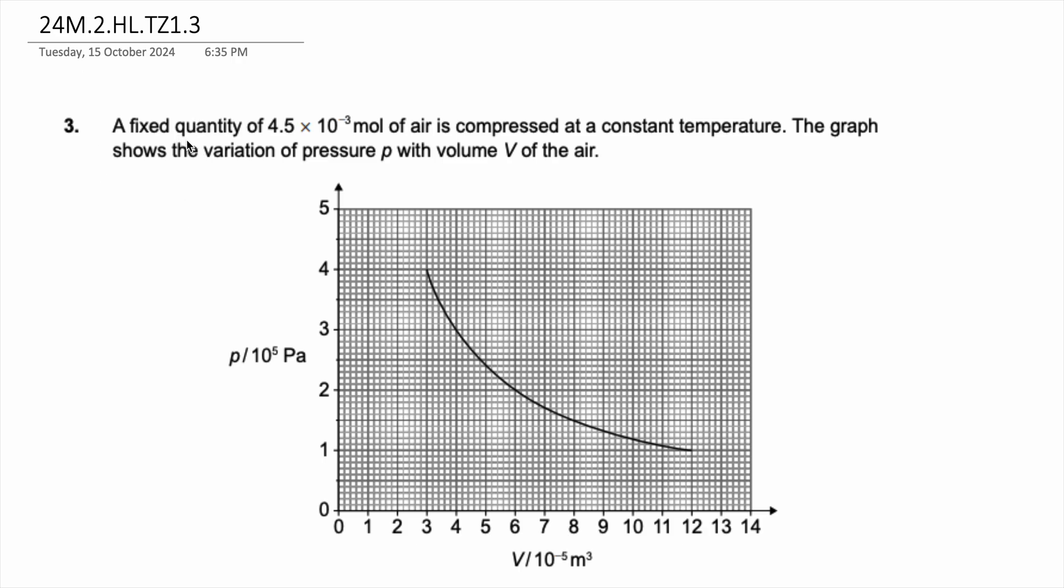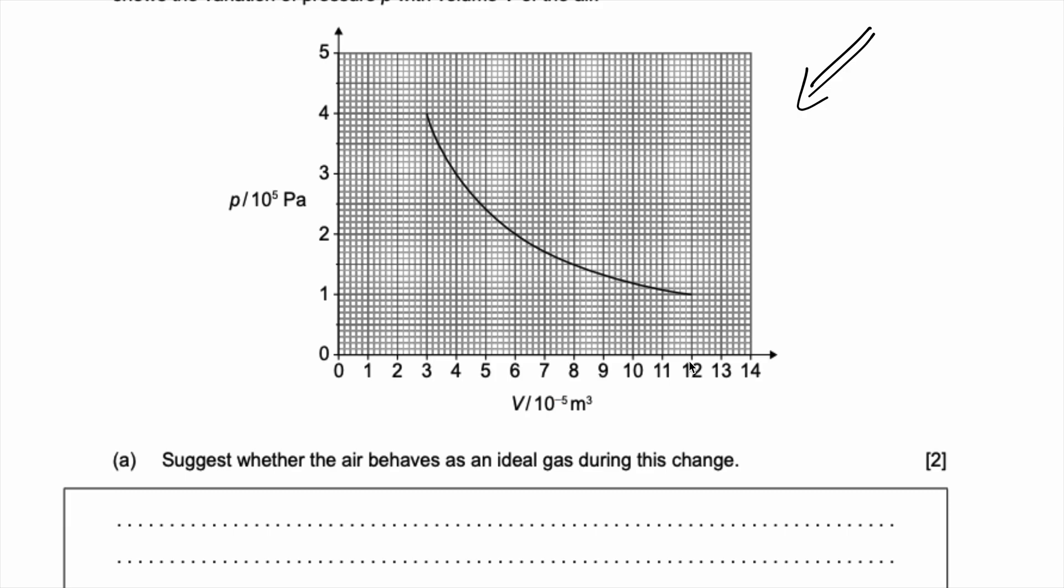A fixed quantity of 4.5 into 10 to the power of negative 3 moles of air is compressed at a constant temperature. The graph shows the variation of pressure P with the volume V of the air. So that's the graph that represents this scenario. Suggest whether the air behaves as an ideal gas during the change.